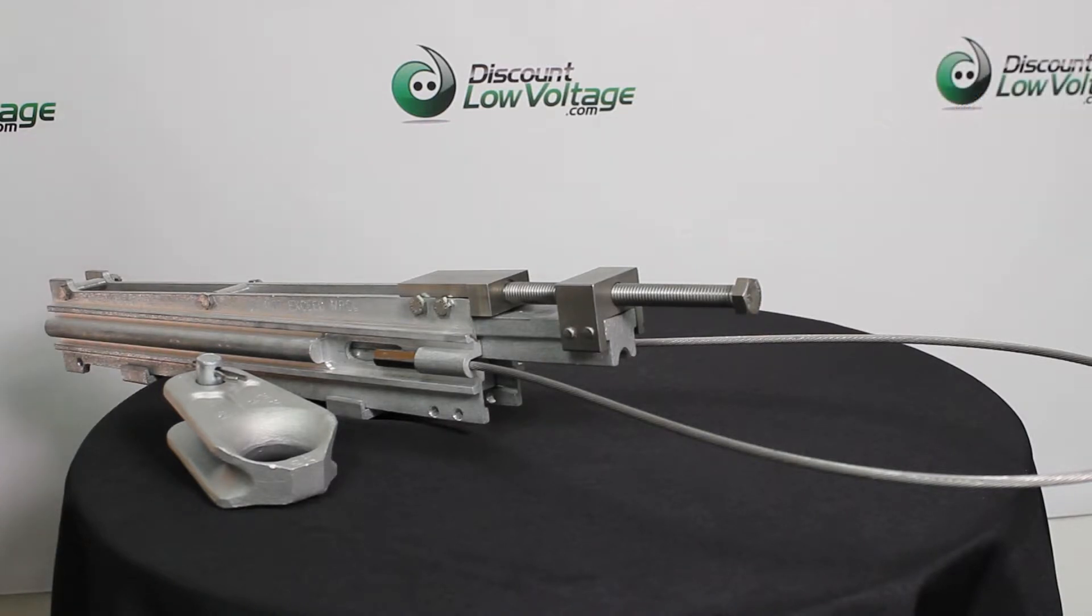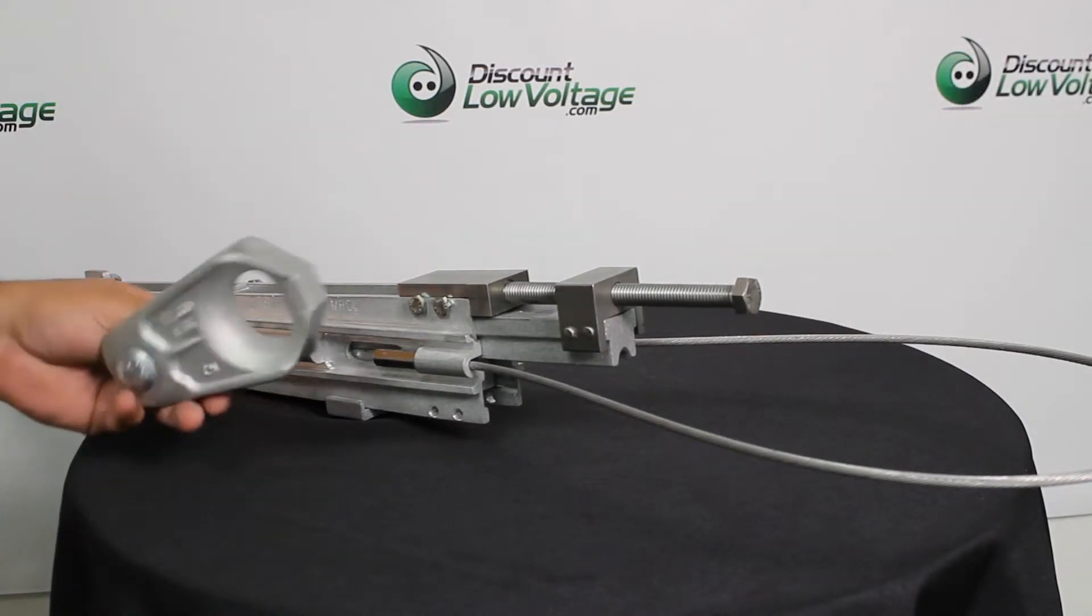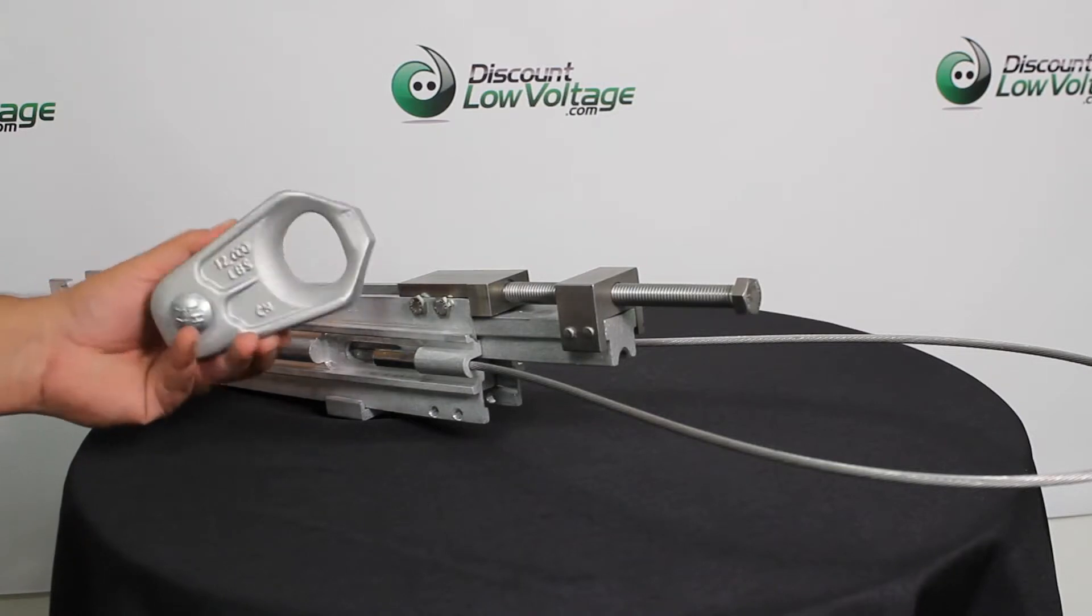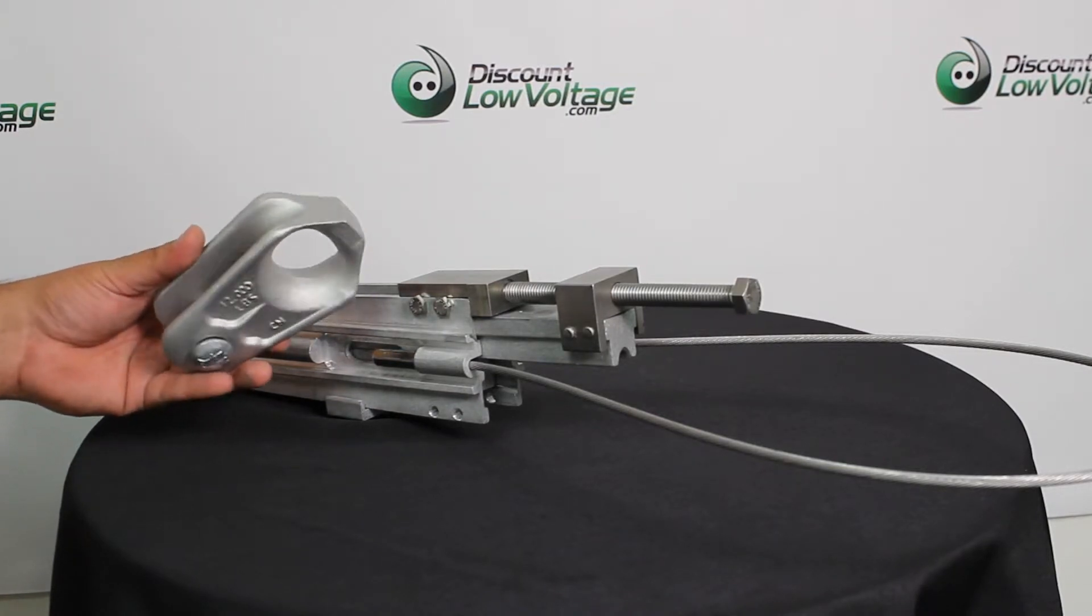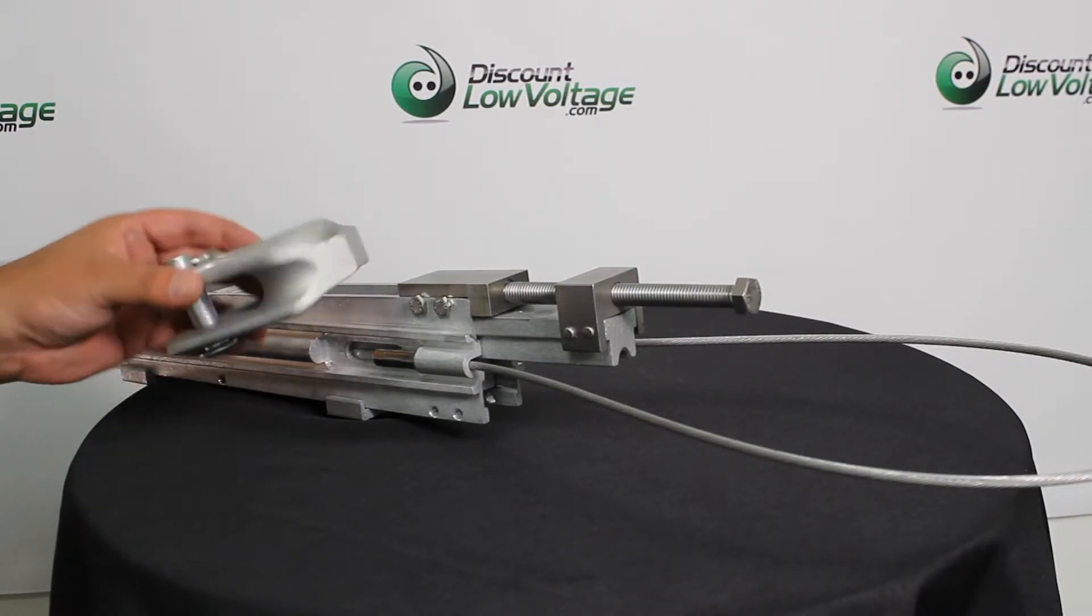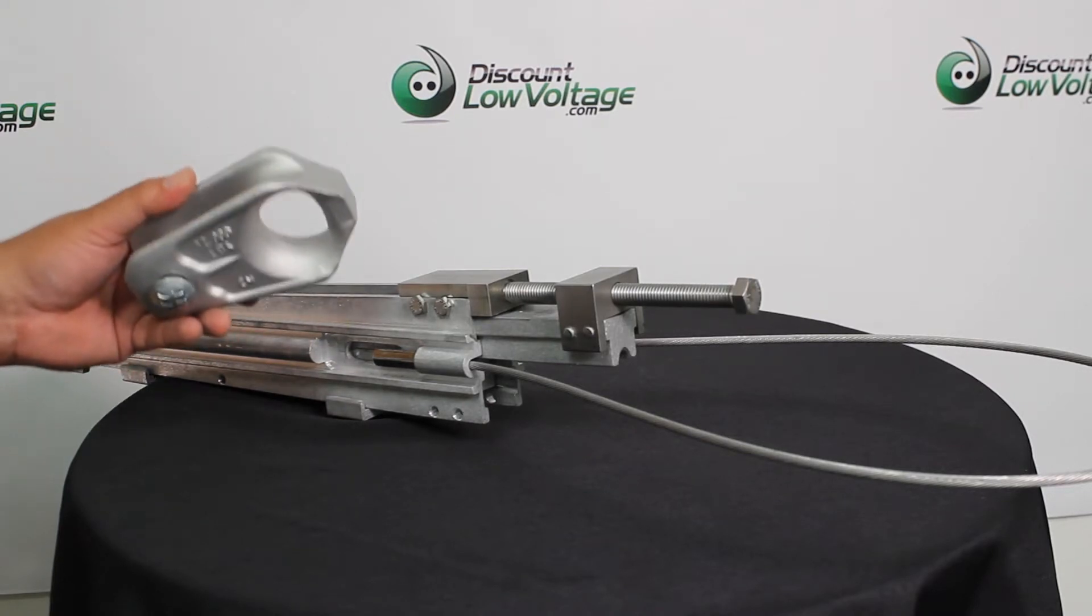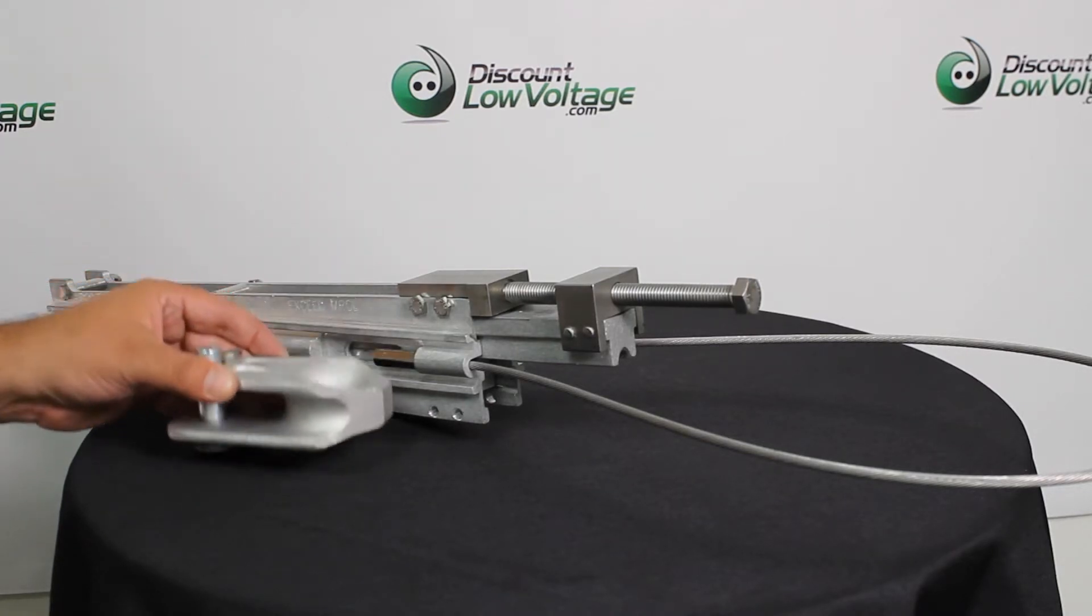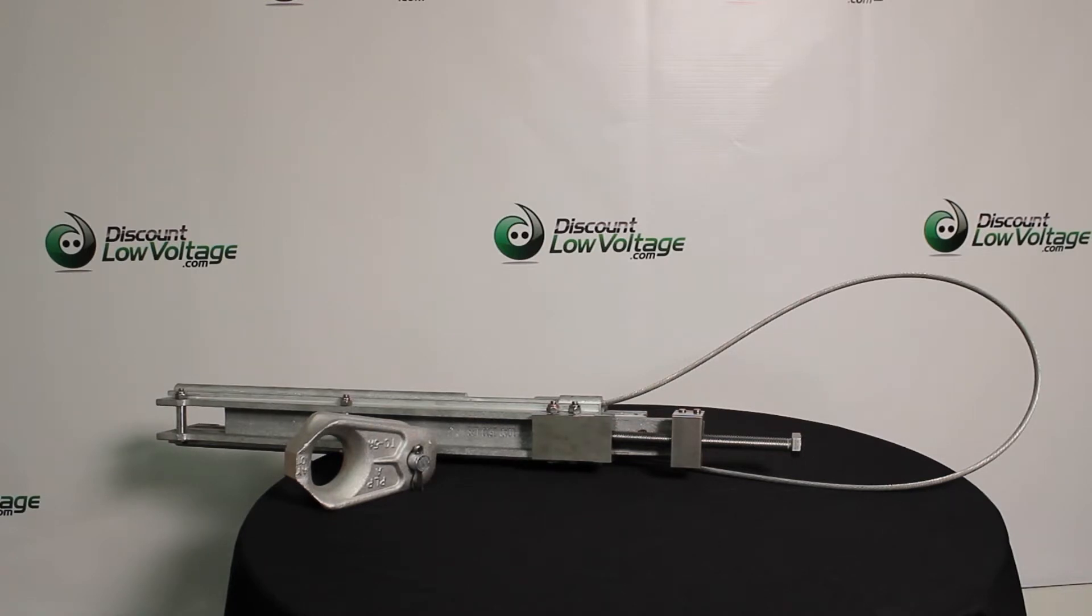Now there is also a thimble that is included and this is designed to attach the temporary grip bail to a chain hoist. For more detailed spec sheet and to order online, visit discountlowvoltage.com.